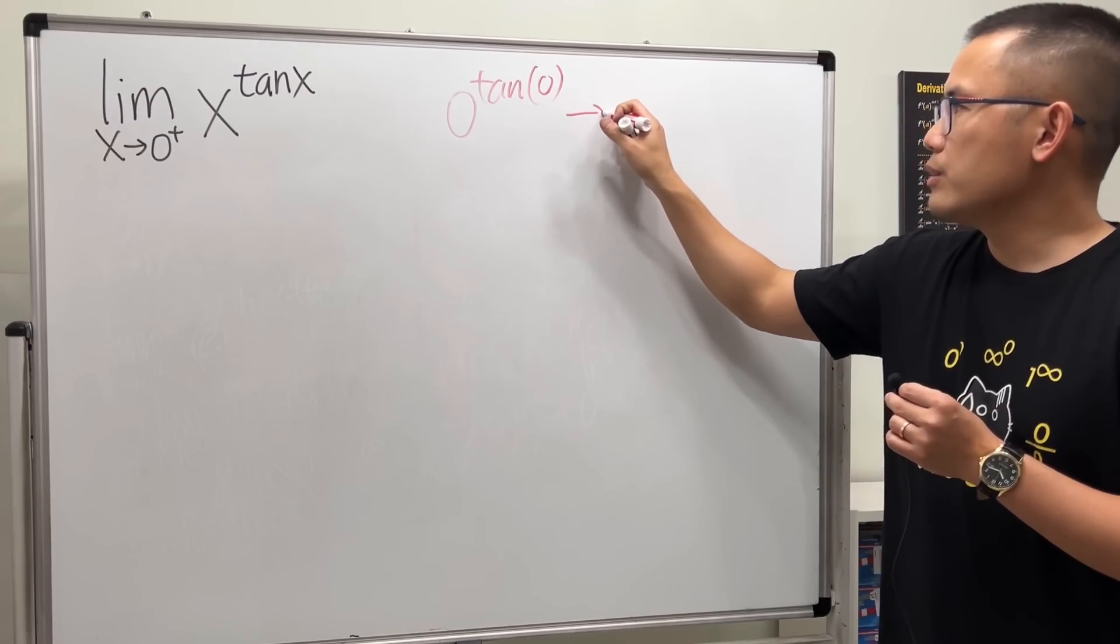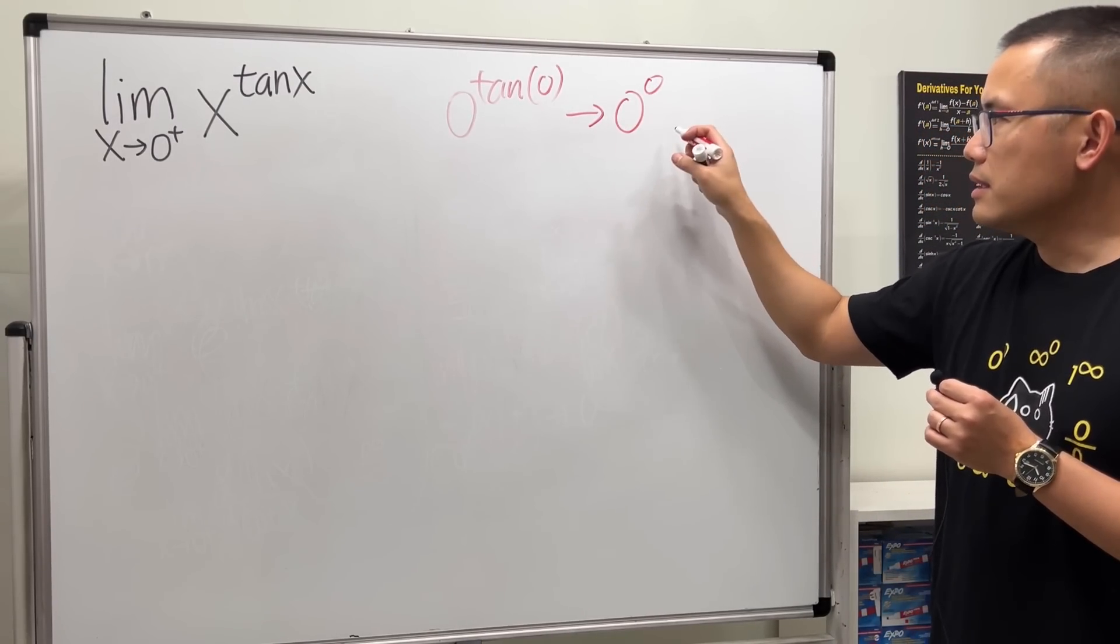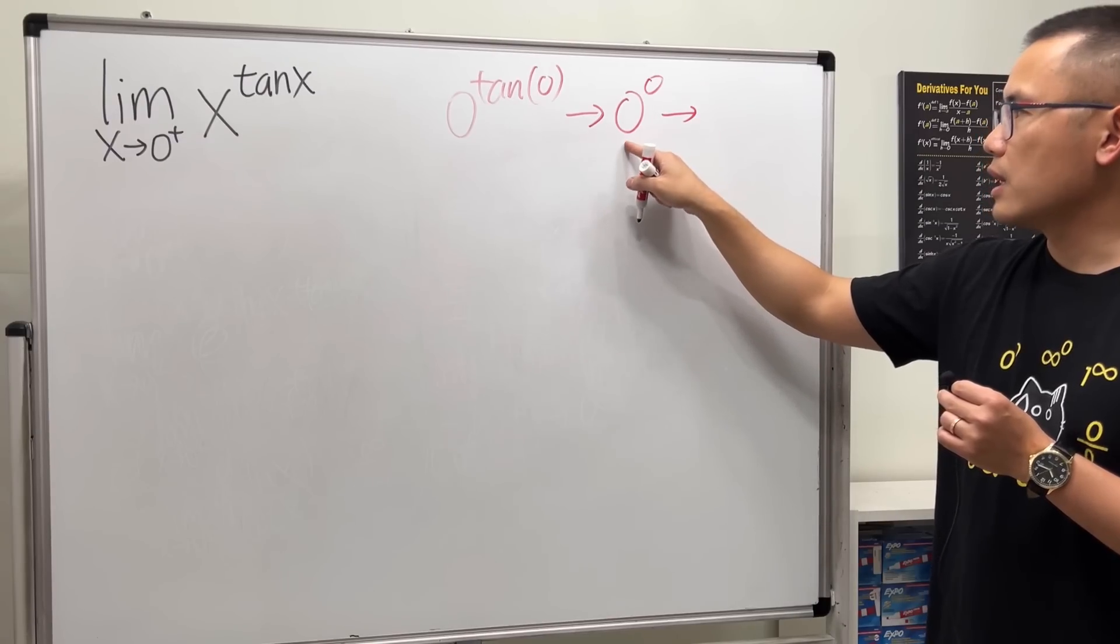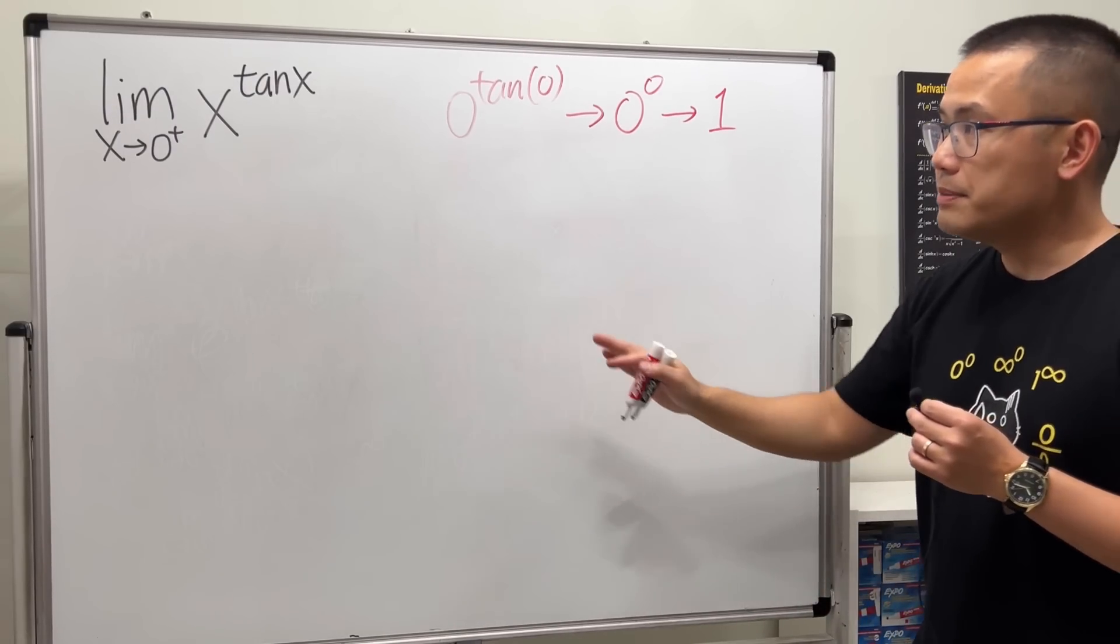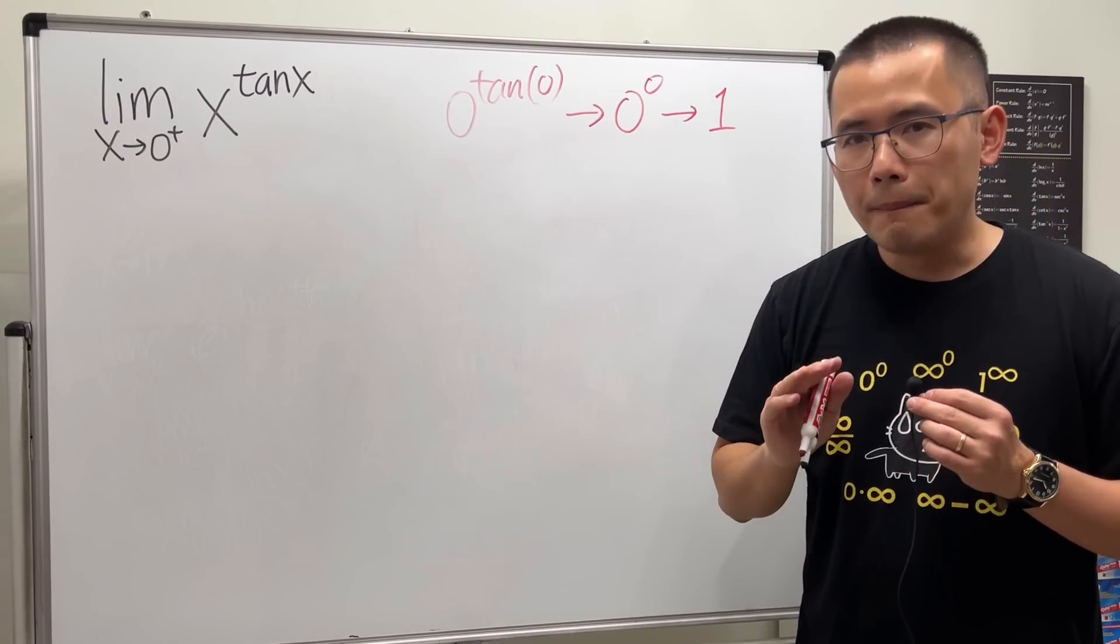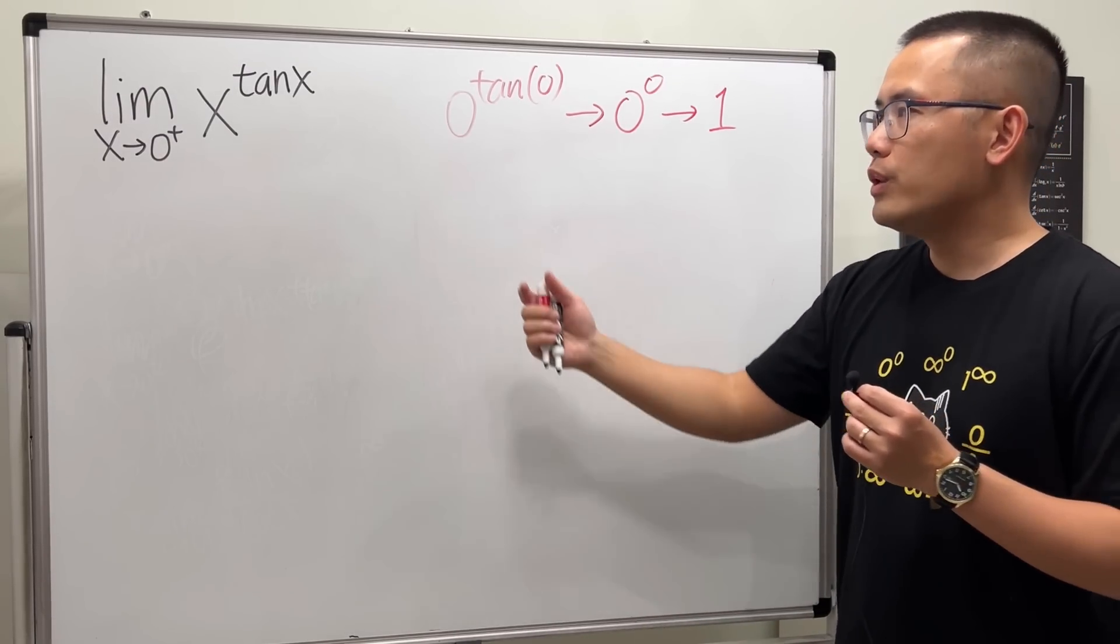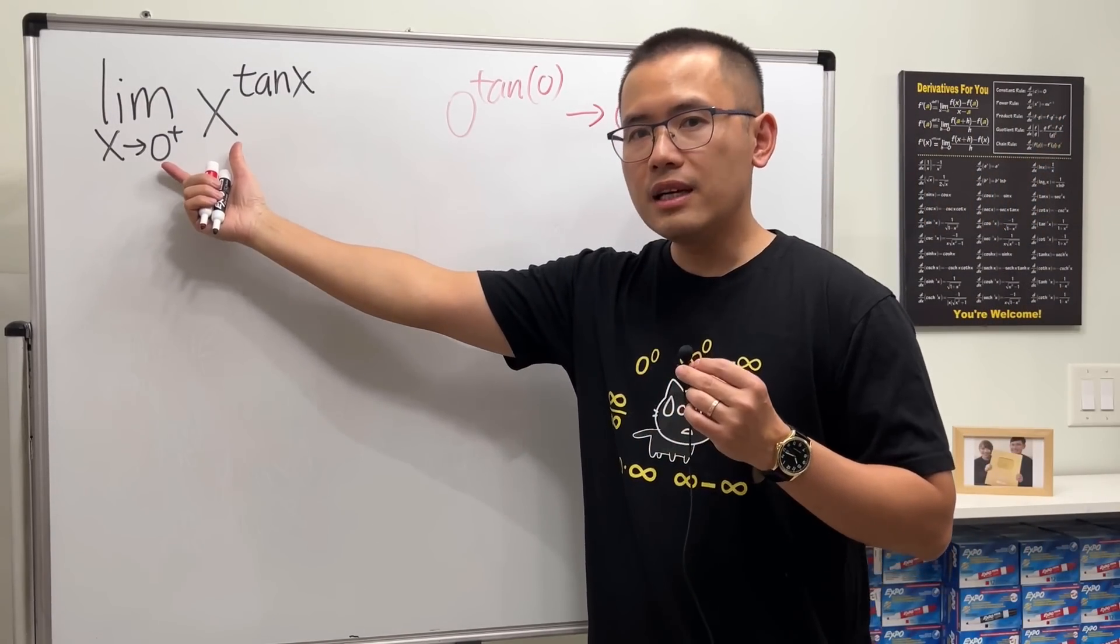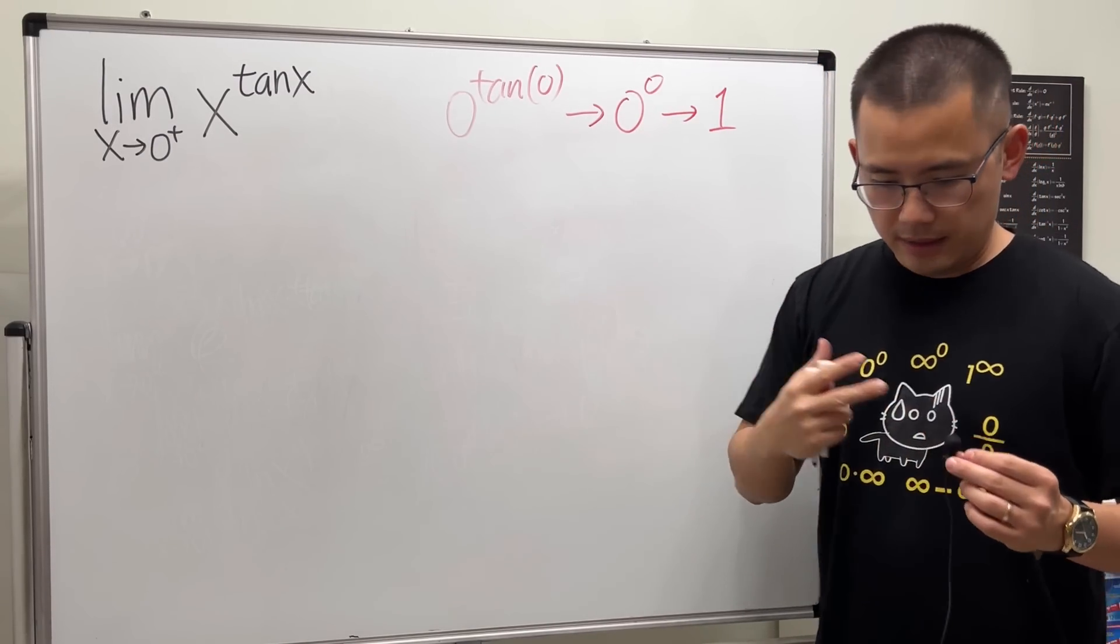So this right here looks like we have zero to the zero's power. Well, this is the common mistake that a lot of people just conclude that this is going to give us one. In this particular case, the final answer is indeed equal to one, but this right here, it's not the way to show it because we are working with a limit.